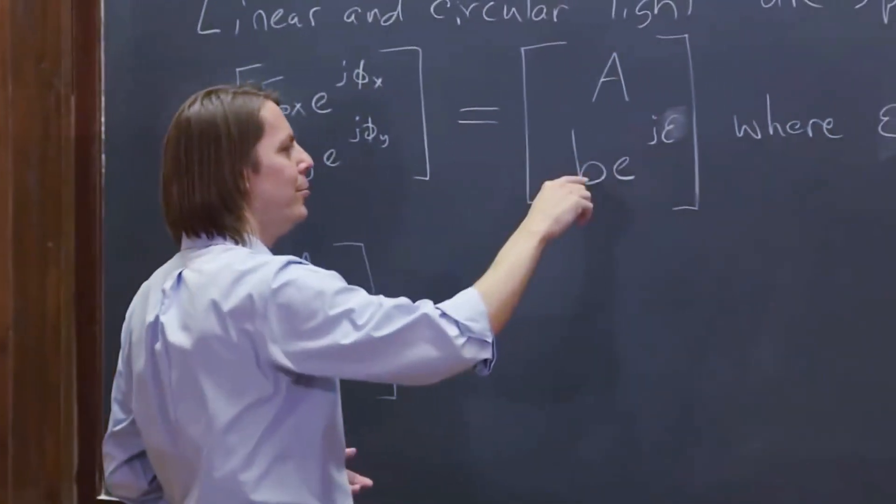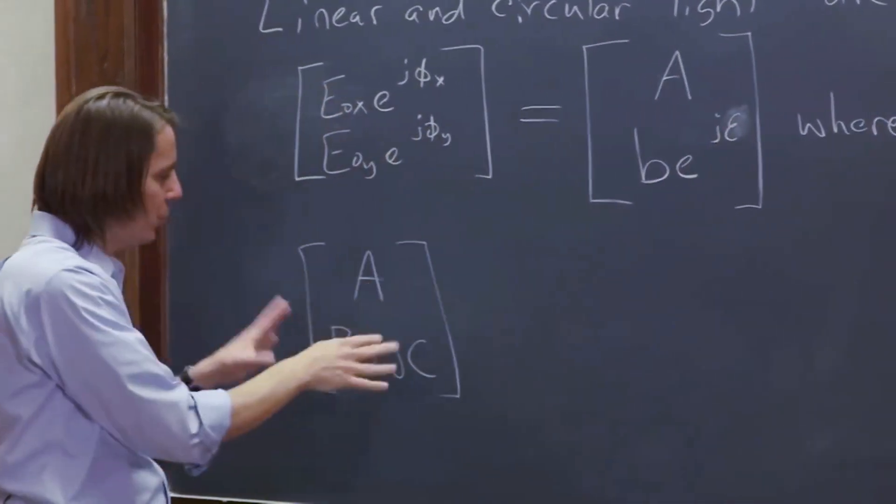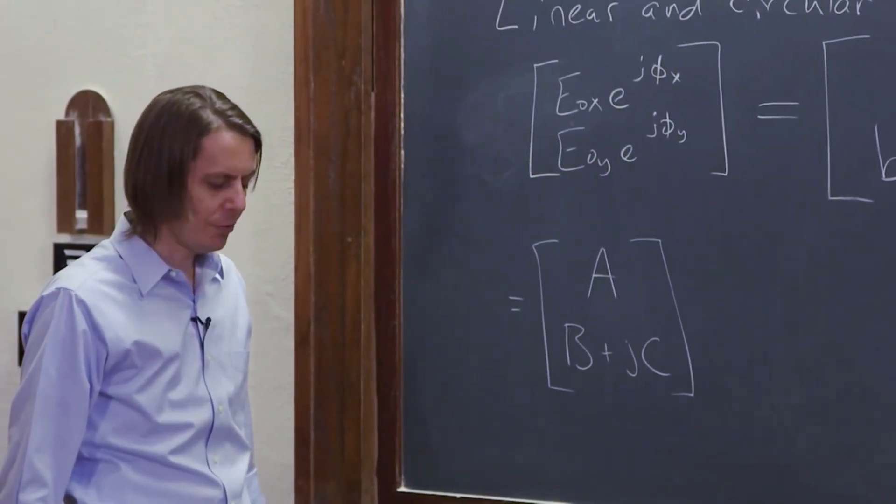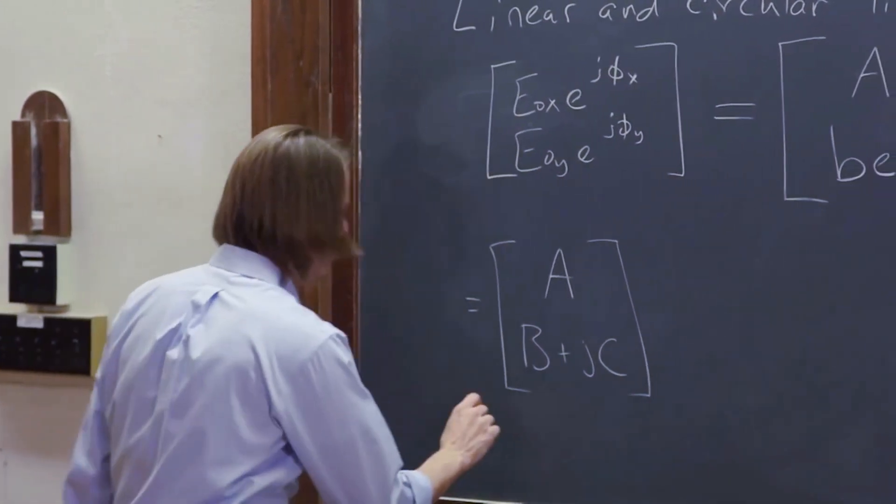You could do a little B epsilon, but we tend to want to get it like this for Jones form, Jones vectors. So this is elliptical.